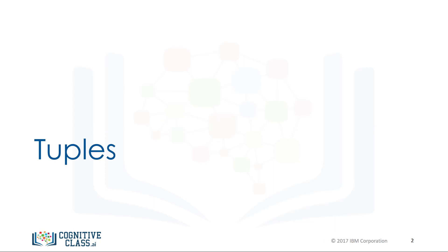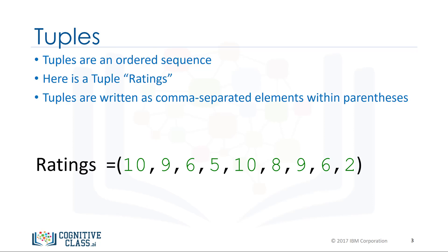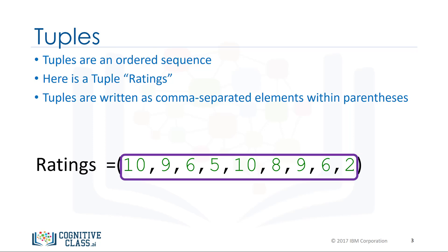Tuples are an ordered sequence. Here is the tuple 'ratings'. Tuples are expressed as comma separated elements within parentheses. These are the values inside the parentheses.